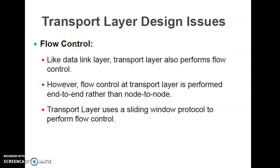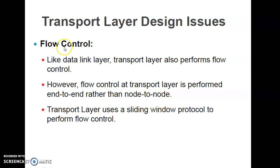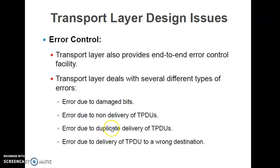Flow control is needed because the speeds of sending and receiving processes are not the same. An important point: flow control at the transport layer is performed end-to-end, rather than node-to-node as in the data link layer. The data link layer performs node-to-node flow control, while the transport layer performs end-to-end flow control — process to process. The transport layer uses a sliding window protocol to perform flow control.